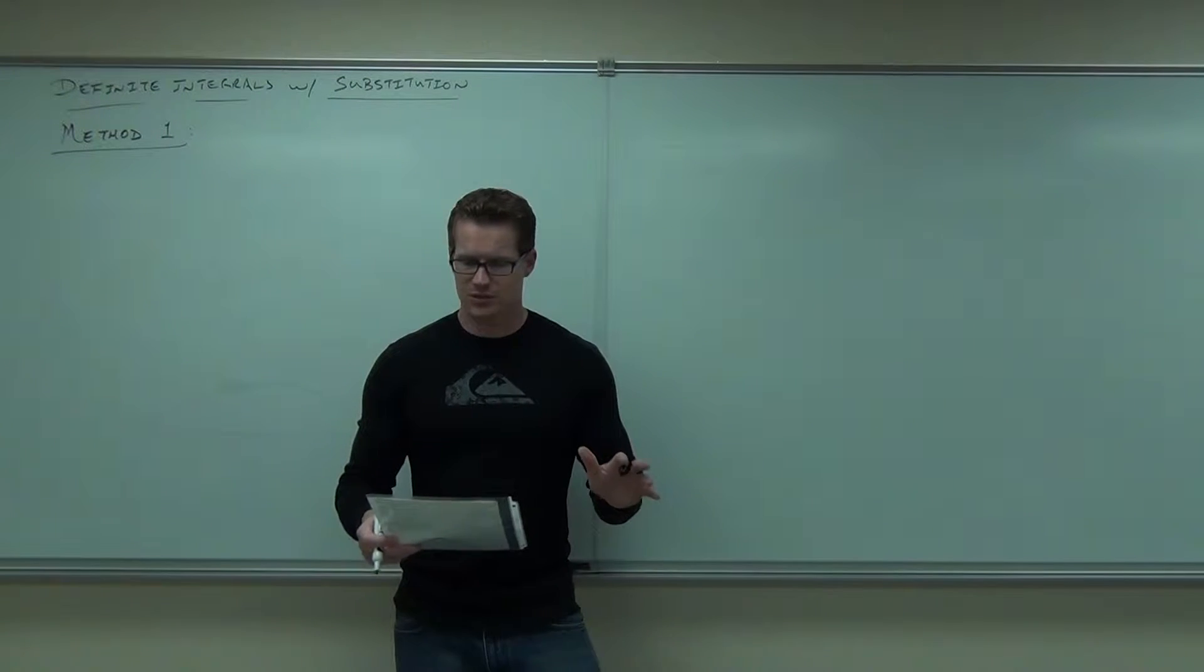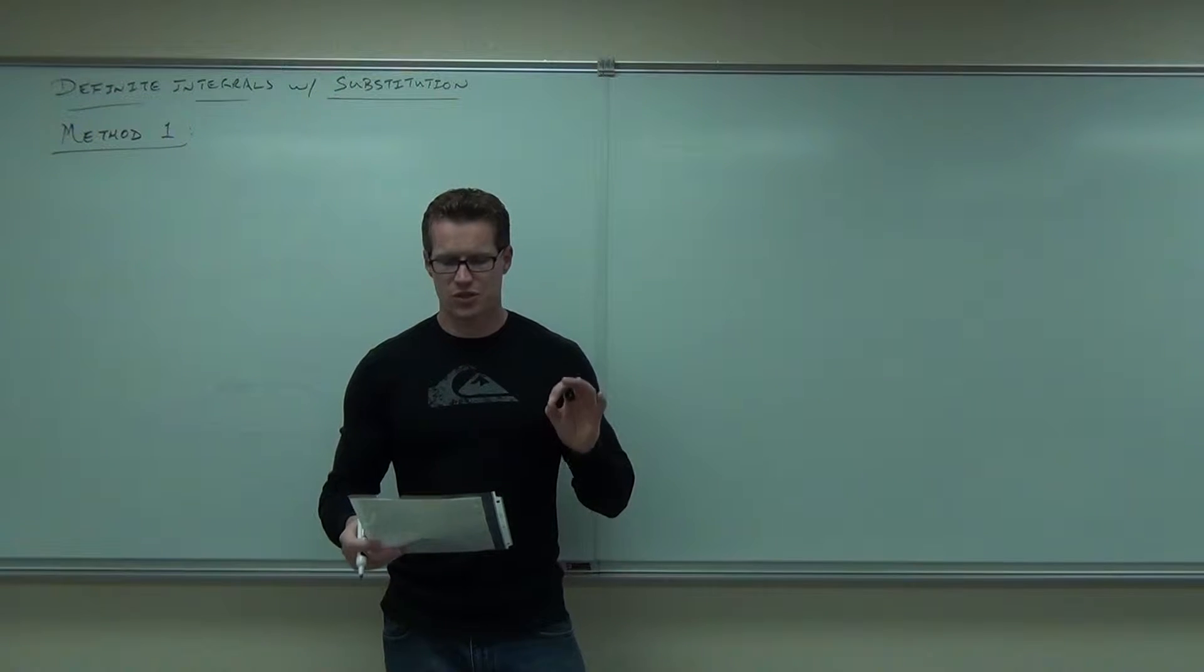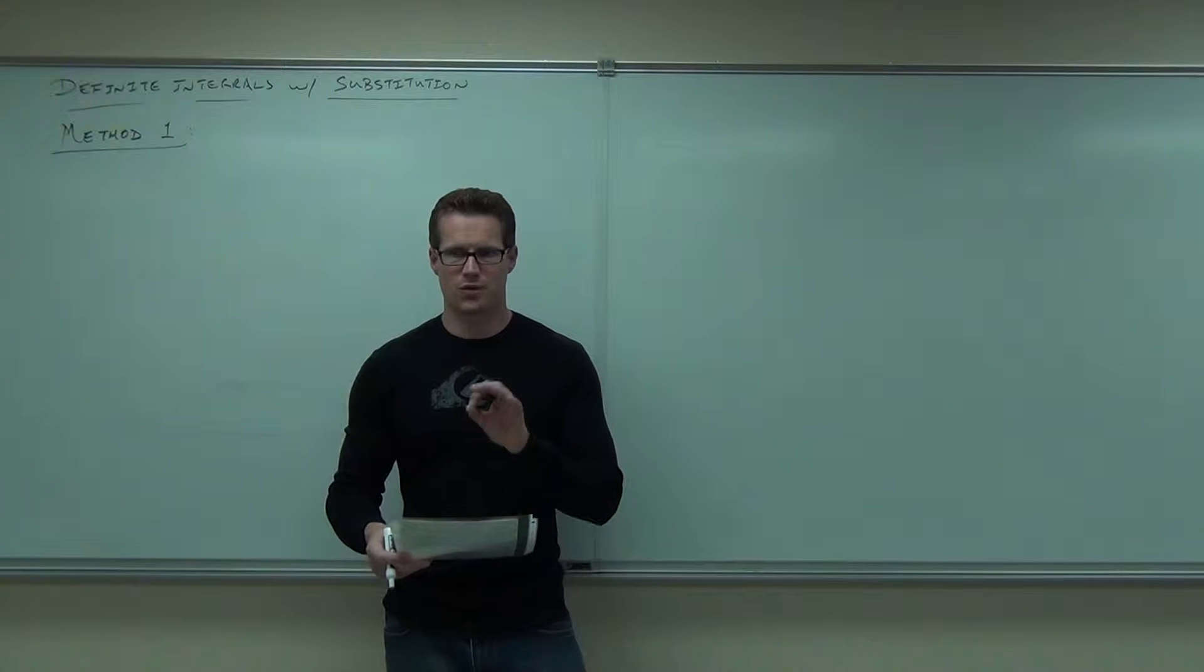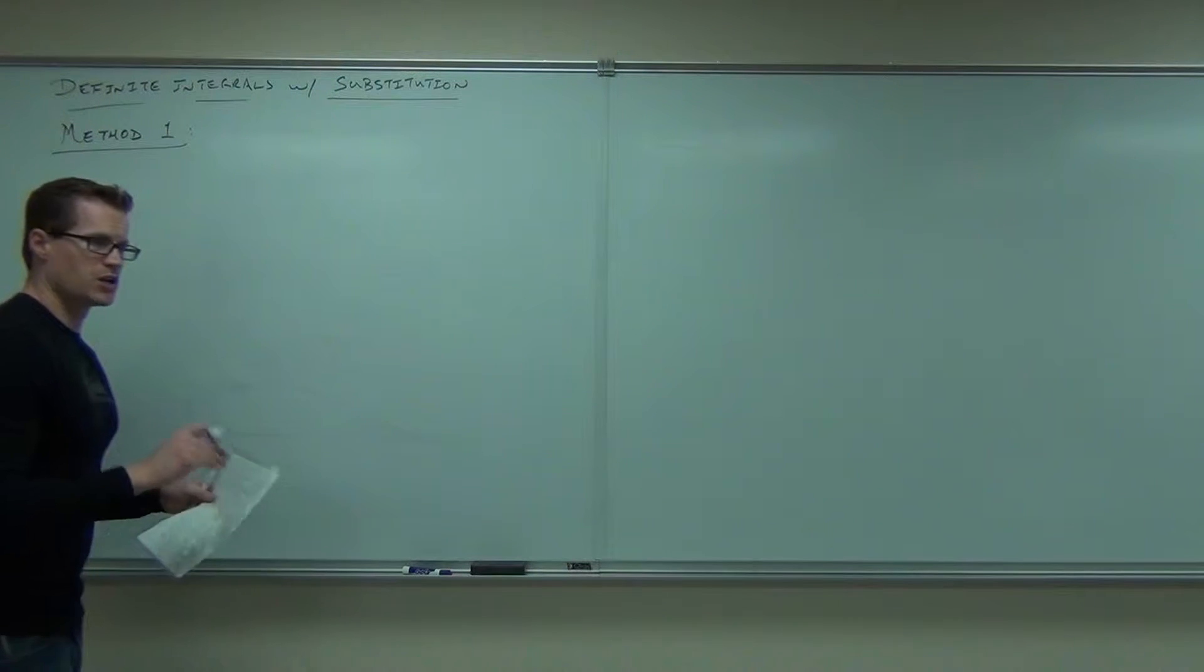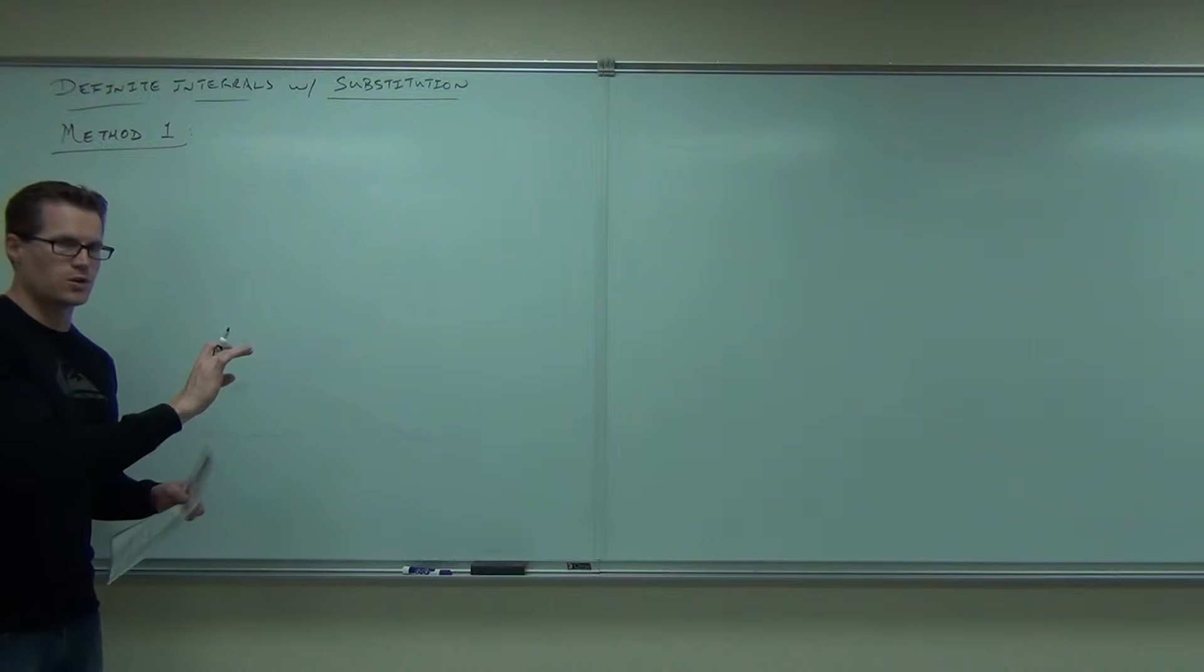You're going to do the same exact thing as before, but you're going to be sure to substitute back in for u before you evaluate. So method number one is don't change bounds, sub in for u at the end.